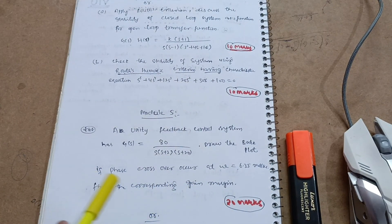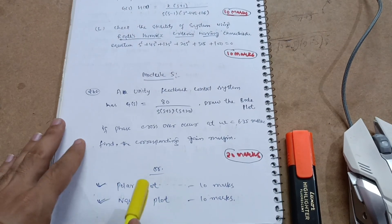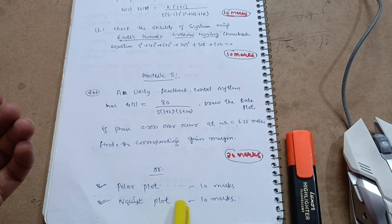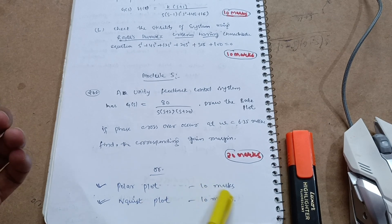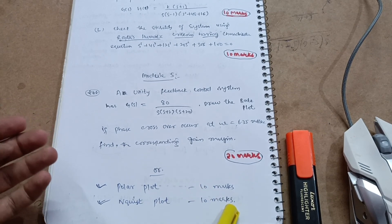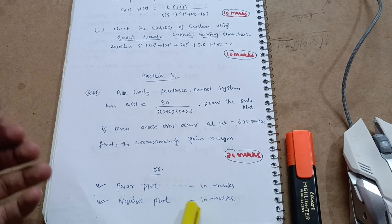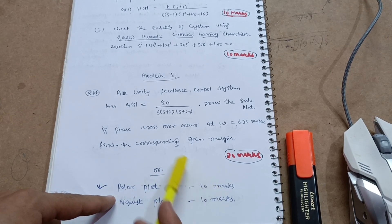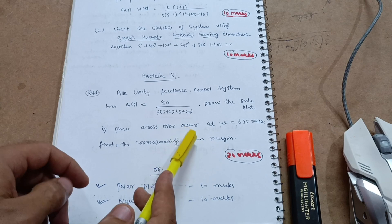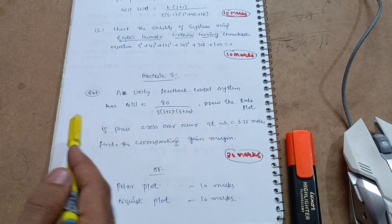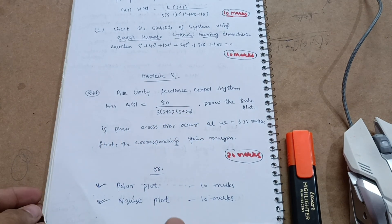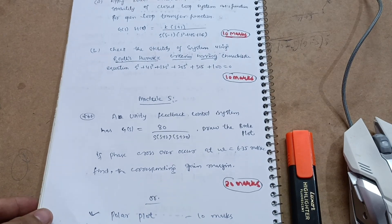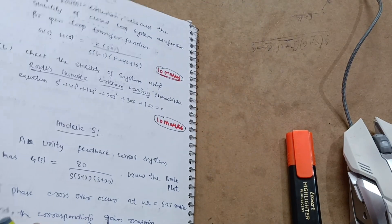Apart from that, in another chapter, if you are comfortable with polar plot and Nyquist plot, they each carry 10 marks. There is a little risk if you don't know the Nyquist plot and only know the polar plot — you will get at least 10 marks. If you just prefer Bode plot, it will be more comfortable to get 20 marks, so I recommend going for the Bode plot. It's a simpler one.